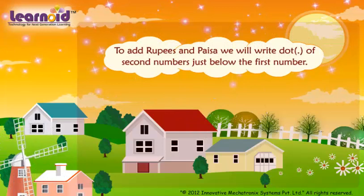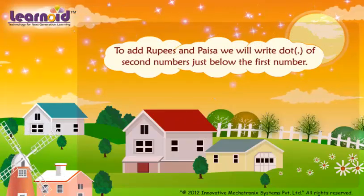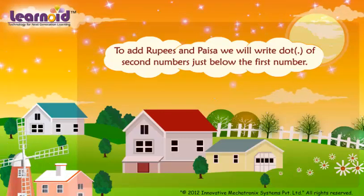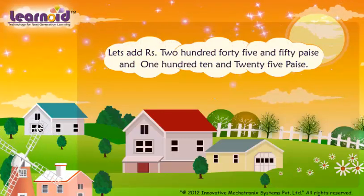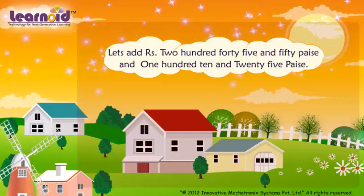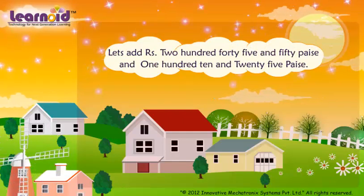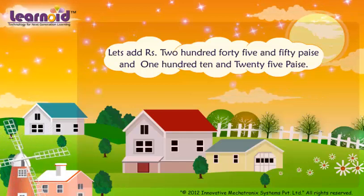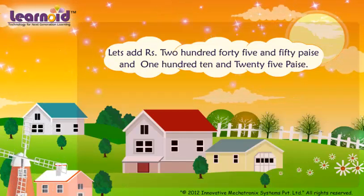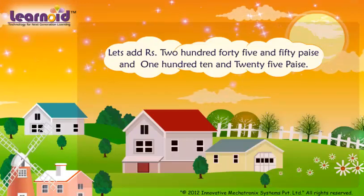To add rupees and paise, we write the dot of the second number just below the first number. Let's add 245 rupees 50 paise and 110 rupees 25 paise. Write the two numbers one below the other, aligning the dots, and add.